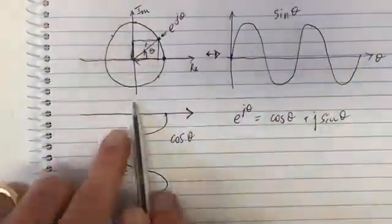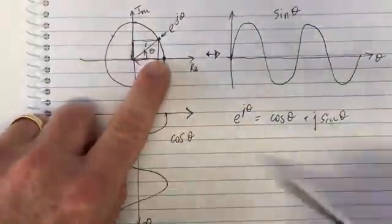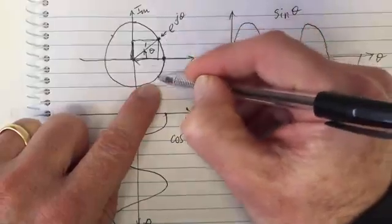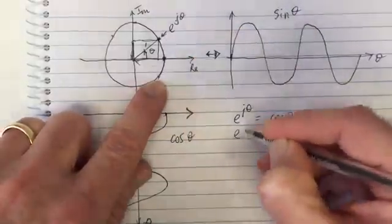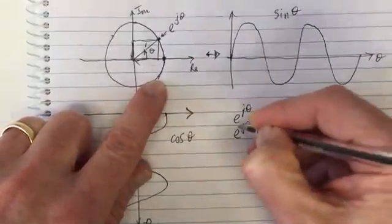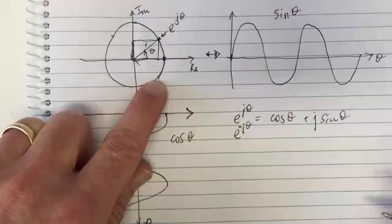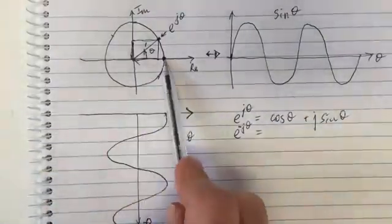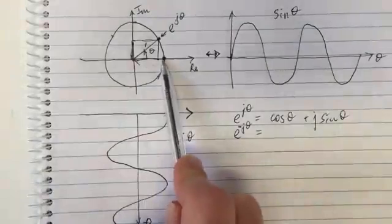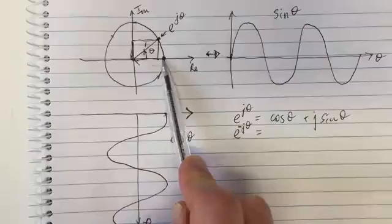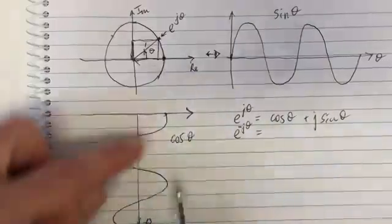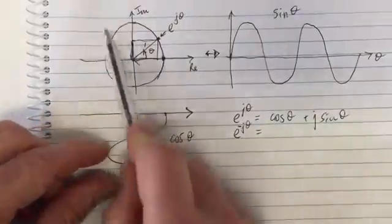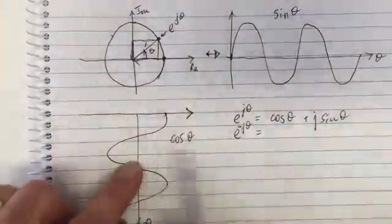So e to the j theta equals cos theta plus j sine theta. So to take that a step further, let's think of getting another equation. If we were to move in the other direction, instead of this way around, we move this way around, then we would have e to the negative j theta. And what would that equal? Well, if we're looking from the bottom, we're still starting here, and just because we're coming towards us or going away from this direction, we can't tell the depth of field. So as we move around in the negative direction, we still would see a cos waveform.